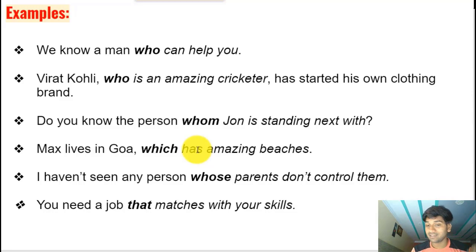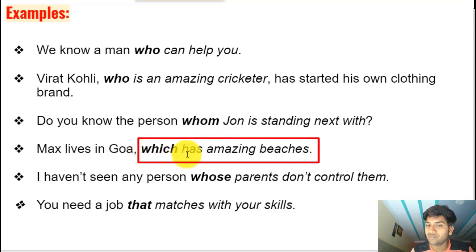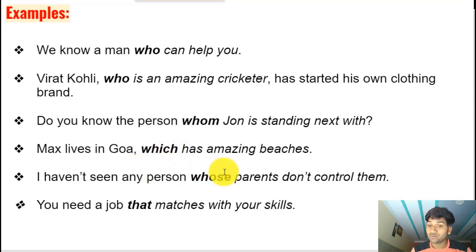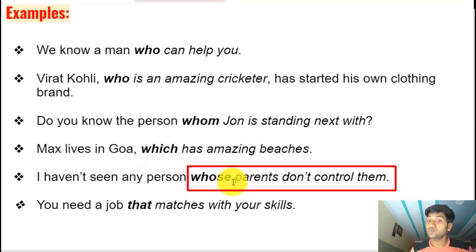'Max lives in Goa, which has amazing beaches.' Here 'which' is the relative pronoun coming next to the noun 'Goa,' giving extra information about it. 'I haven't seen any person whose parents don't control them.' Here 'whose' is the relative pronoun referring to the noun 'person' and talking about its possession — whose parents. These are examples of relative pronouns 'which' and 'whose' in use.